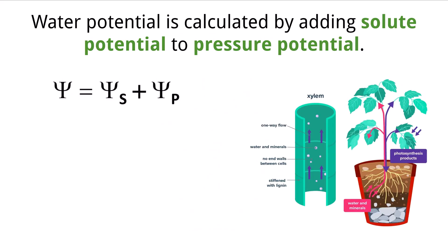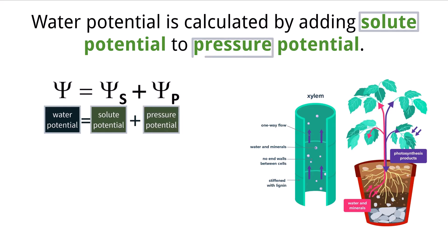Water potential within cells can be calculated by the following equation. Water potential is equal to solute potential plus pressure potential. This is the case because solute potential and pressure potential are the two factors that can vary enough to have an impact on water potential within living systems.